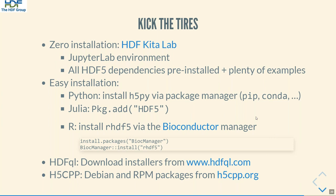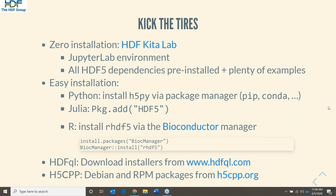The next step: it's very likely the community has the right package ready for you. The Python folks are very organized with pip and Conda or your favorite package manager. Likewise, in Julia or R, you can get the R HDF5 package from Bioconductor. If you are more interested in query-type interfaces, I recommend HDFQL — you can download installers for Mac, Windows, and Linux from HDFQL.com. For H5CPP, you can get Debian and RPM packages from the H5CPP homepage.